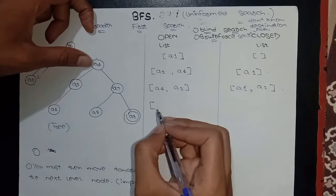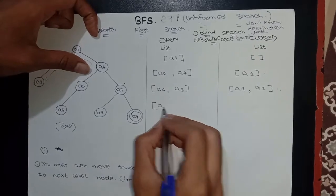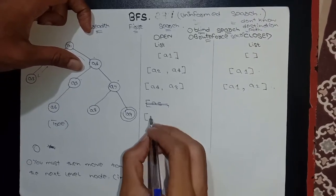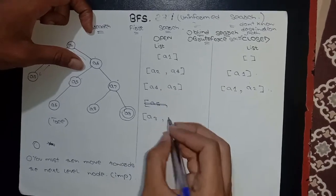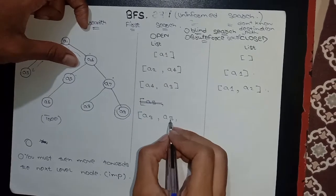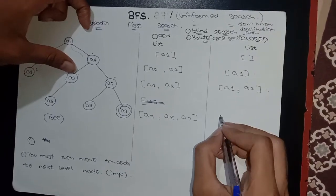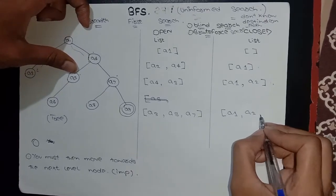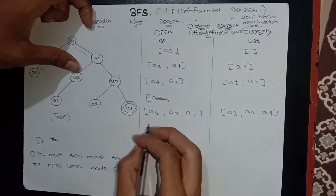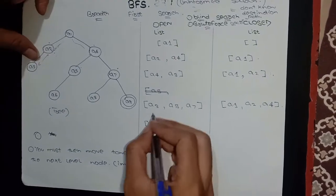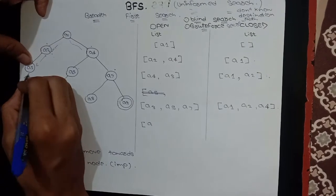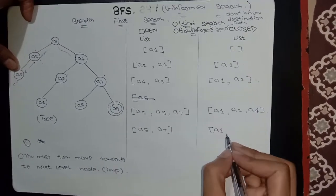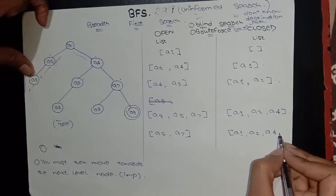Now I consider A4 and further explore it — A4 has children A5 and A7. Wait, actually I have to first write A3, then further explore A4's nodes which are A5 and A7. Then I put A4 into the close list. Now I have to further explore A3, but first write A5 and A7 according to the formula. A3 doesn't have any further child node, so I put it directly into the close list.